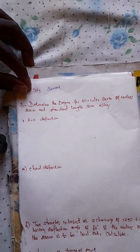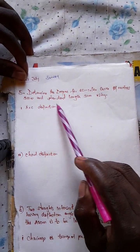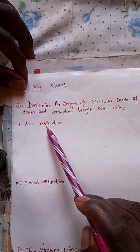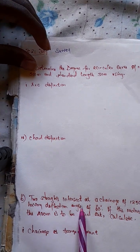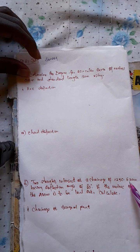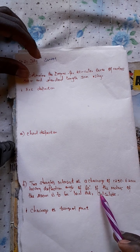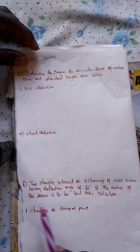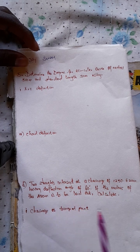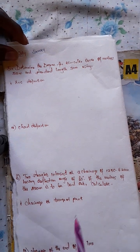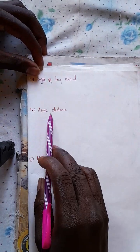Part A: Determine the degree of a circular curve of radius 300 meters and standard chain length using the arc definition. Part B: Two straights intersect at a chainage of 1250.620 meters, having a deflection angle of 60 degrees. If the radius is 400 meters, calculate the chainage at the tangent point, chainage at the end of the curve, length of the long chord, apex distance, and mid-ordinate.